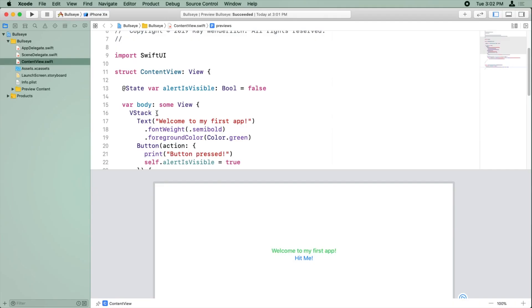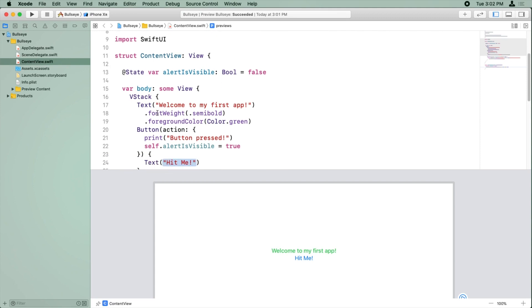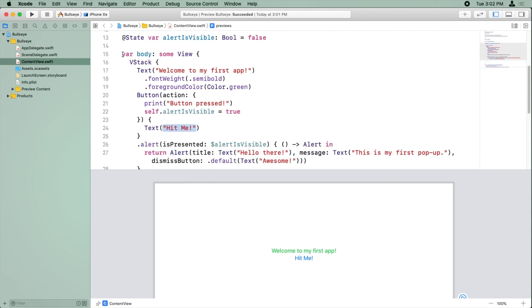All right, let's take another look at the code we have here for Bullseye. Remember, it's all about learning via repetition. So we have the body, which is supposed to be returning a view that represents the entire screen. And right now, what we're returning is a VStack that contains two items inside. The first is a text that says, welcome to my first app. And the second view is a button that says, hit me.